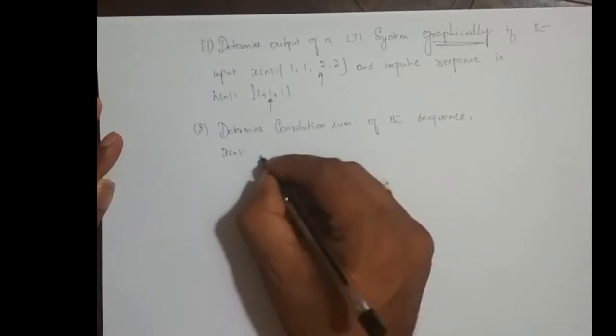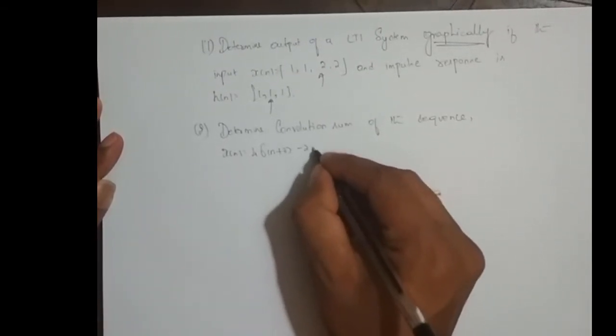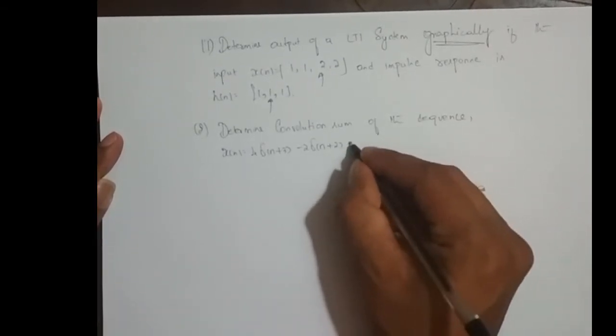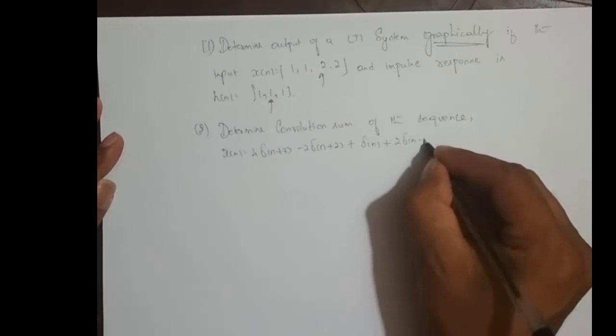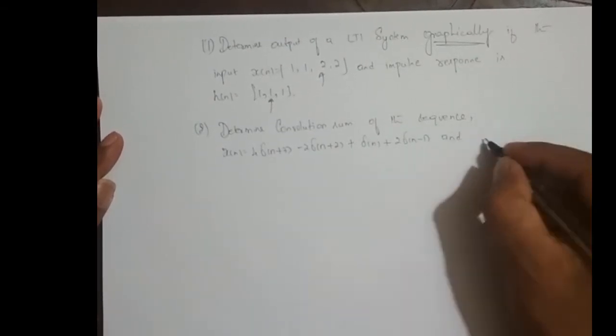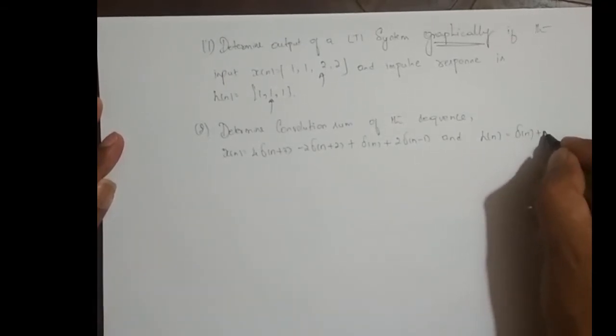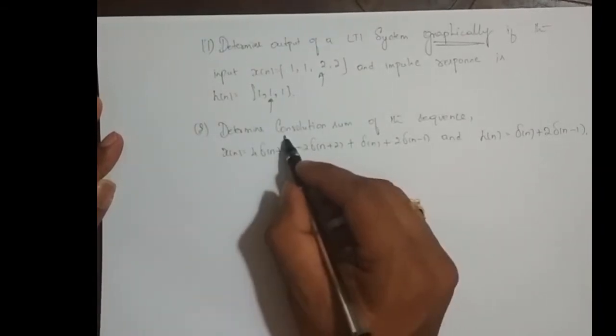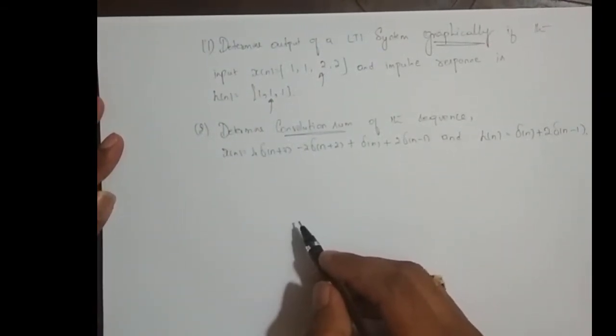x of n is equal to 4 times delta of n plus 3 minus 2 times delta of n plus 2 plus delta of n plus 2 times delta of n minus 1, and h of n is equal to delta of n plus 2 times delta of n minus 1. Determine convolution sum, so convolution sum is nothing but again output of an LTI system.